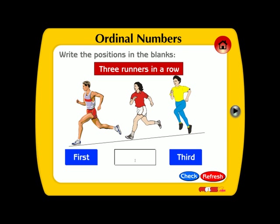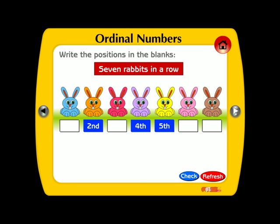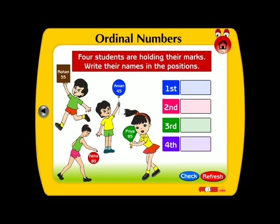Write the positions in the blanks. Three, right. Five frogs in a row. Wrong. Seven rabbits. Four students are holding their marks. Right.